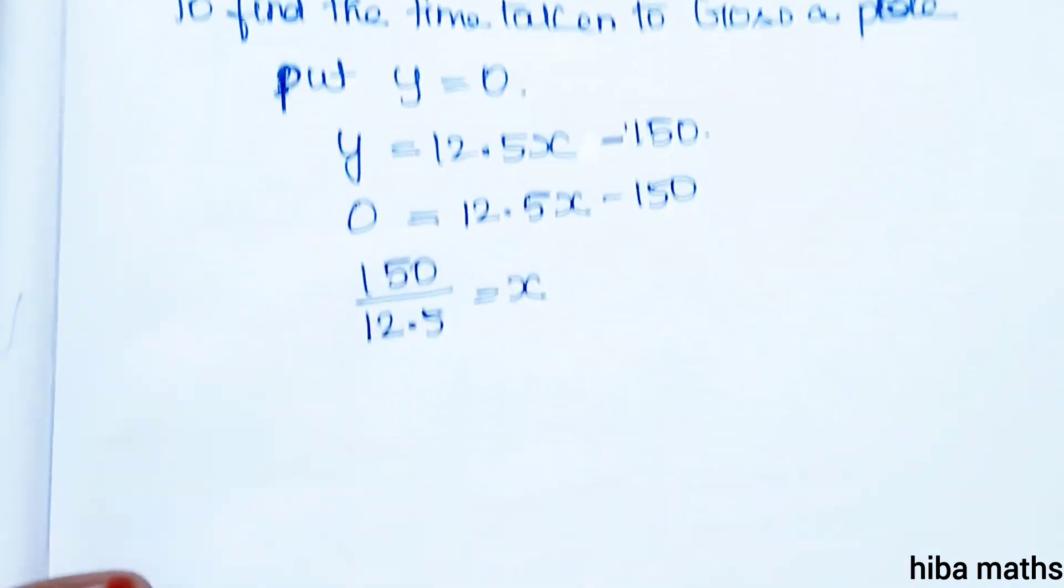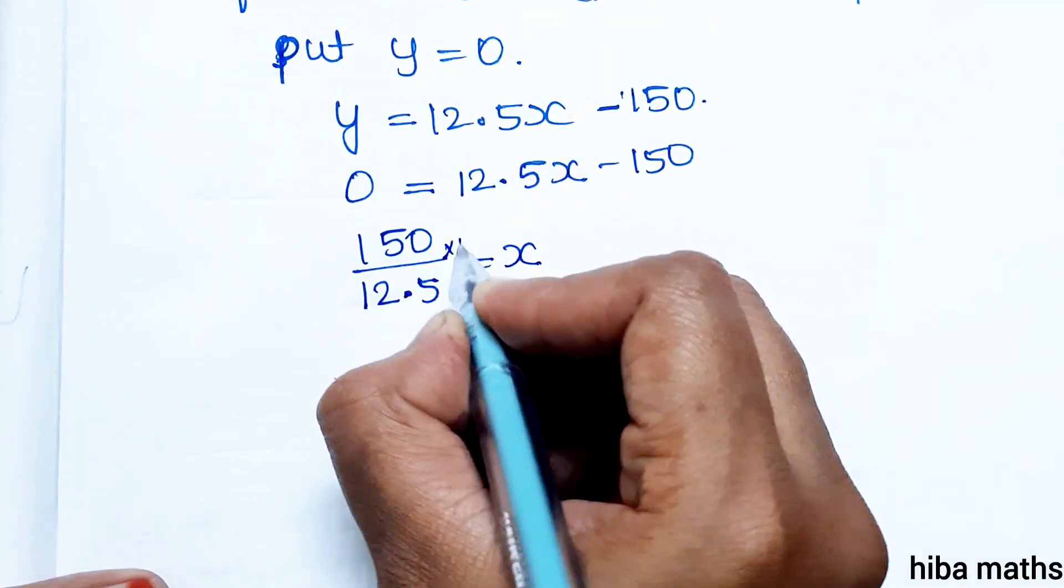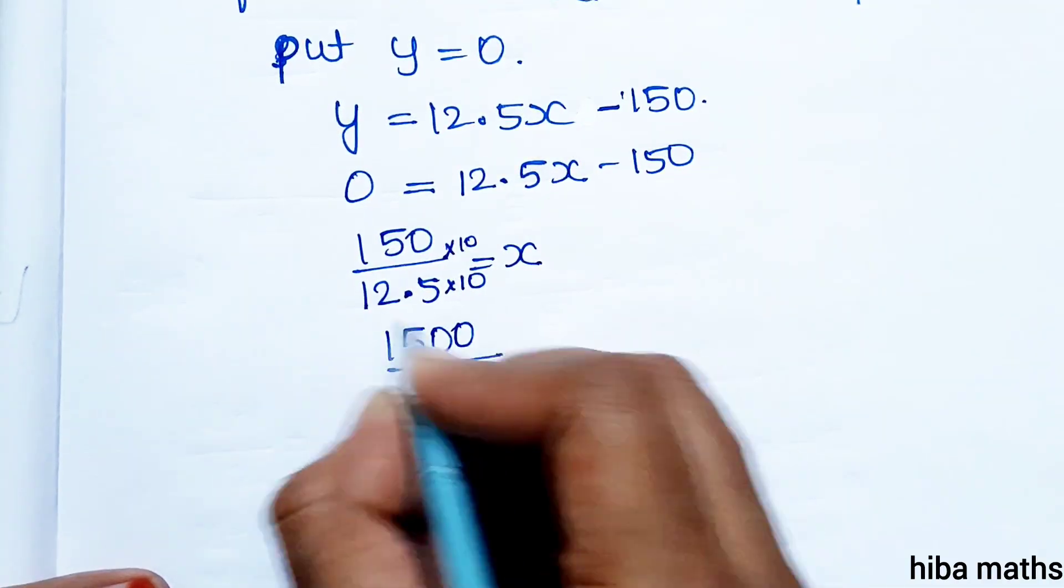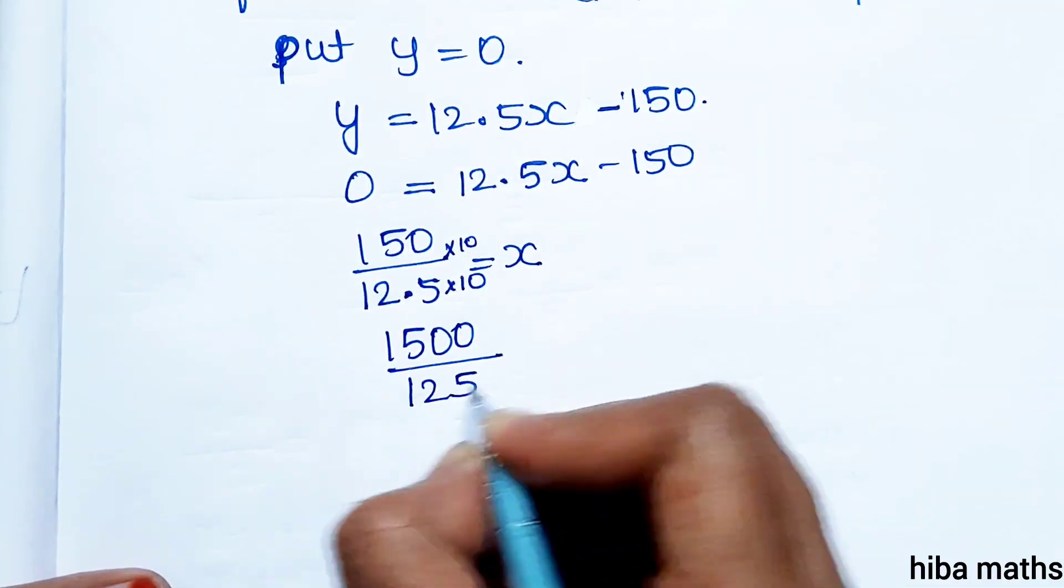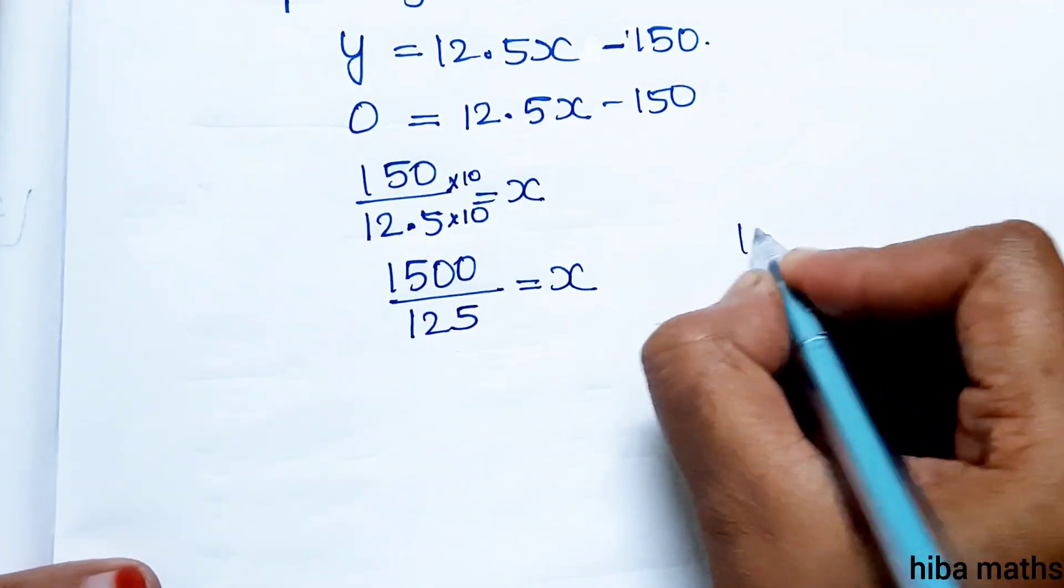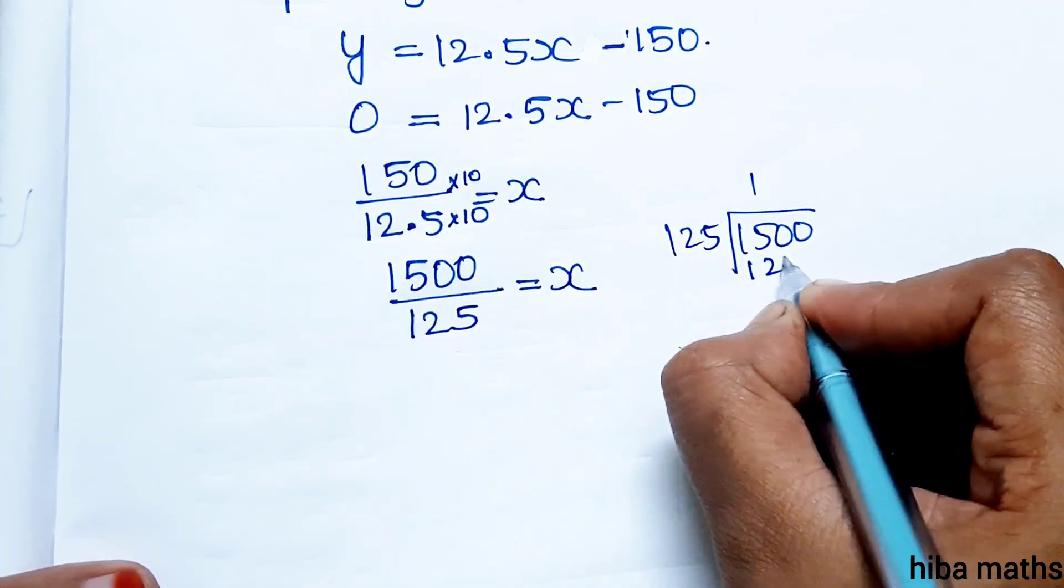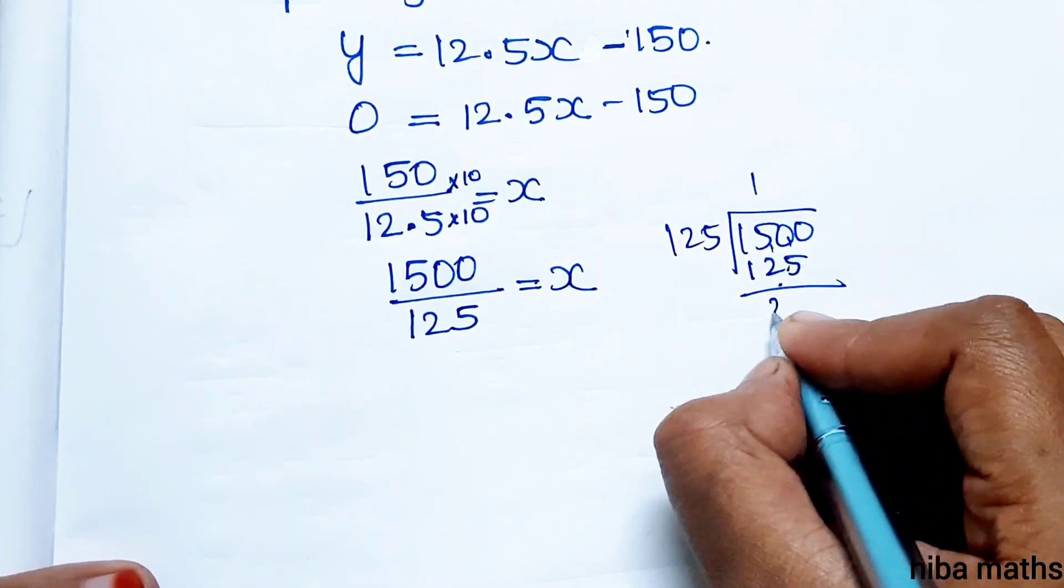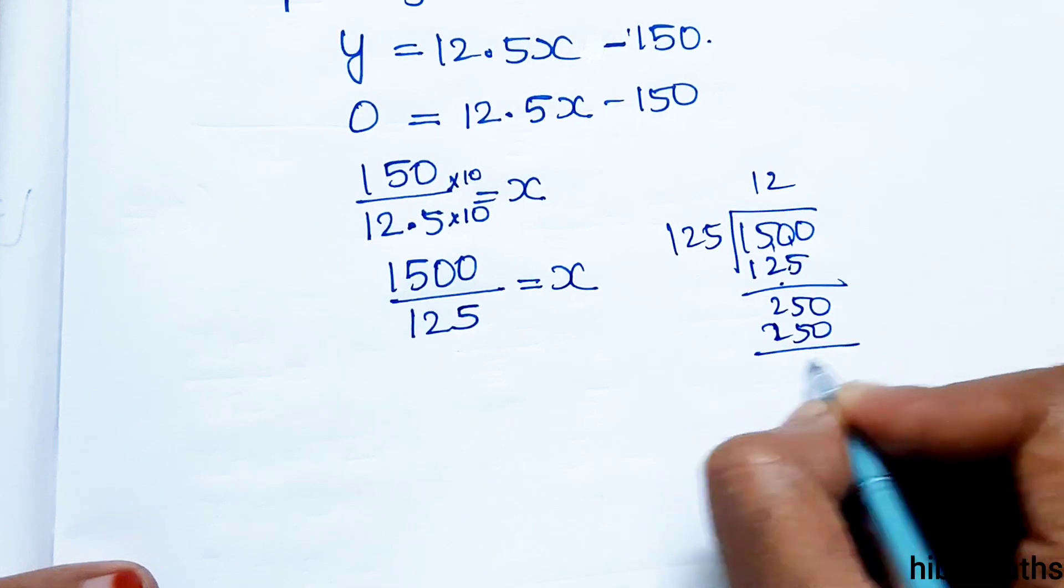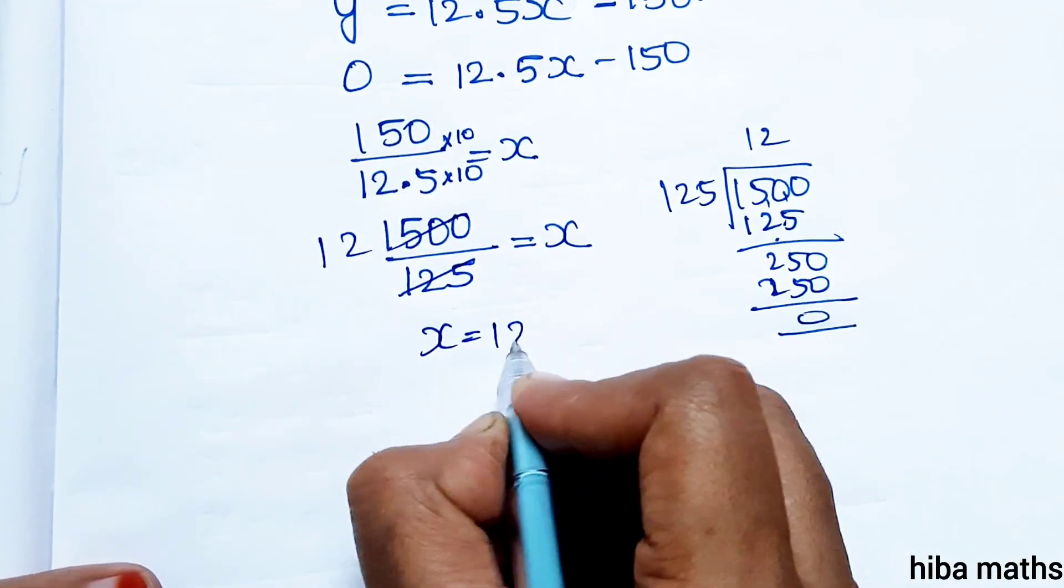To remove the decimal, multiply by 10 into 10. So 1500 divided by 125 is equal to x. Dividing: 1500 divided by 125. One time. 25 goes into 0. Two times. Two times 250. So answer is 12. X equal to 12.